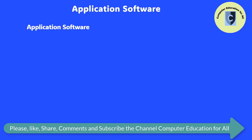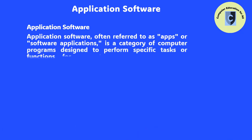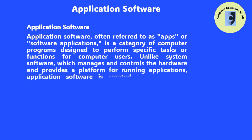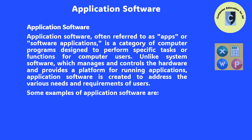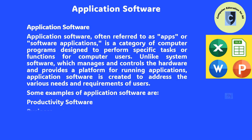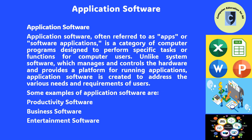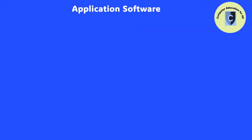Application software, often referred to as apps or software applications, is a category of computer programs designed to perform specific tasks or functions for computer users. Unlike system software, which manages and controls the hardware and provides a platform for running applications, application software is created to address the various needs and requirements of users. Some examples of application software are productivity software, business software, entertainment software, and educational software.